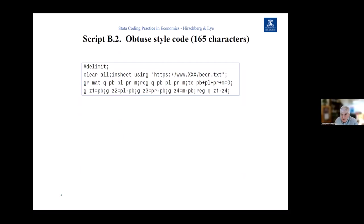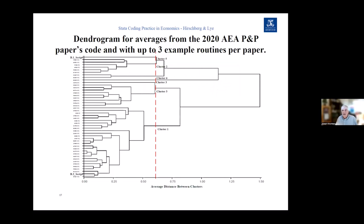Alternatively, I could have written the code like this — my idea of a really obtuse version. First I defined a delimiter, then I stuck lots of different operating elements on the same line, making it extremely compact. I compacted it dramatically by using the minimum number of spaces. I could have put it all on one line, but I broke it into four lines of code.